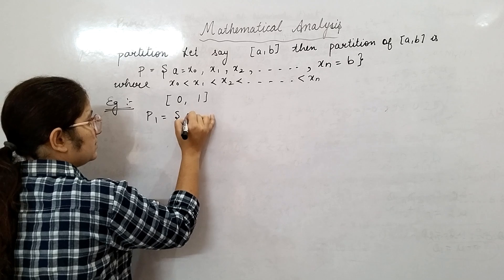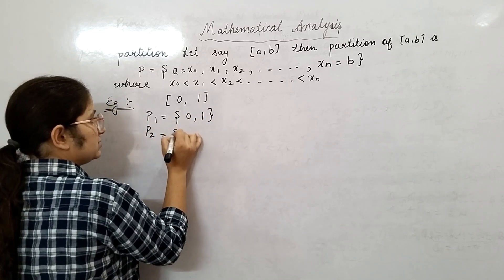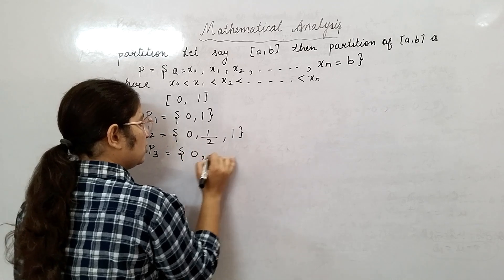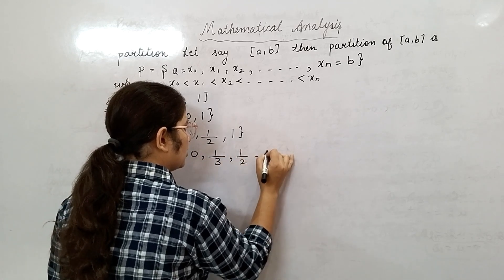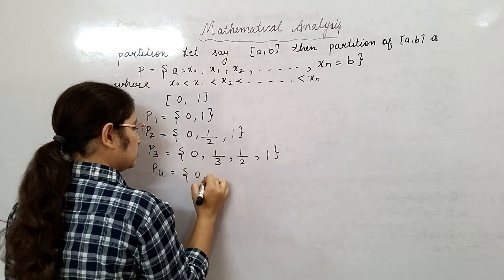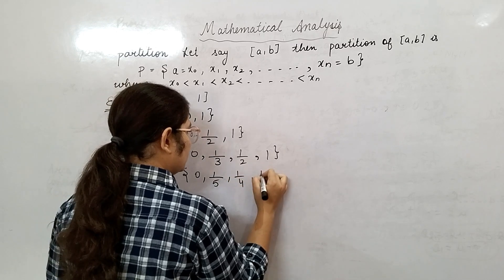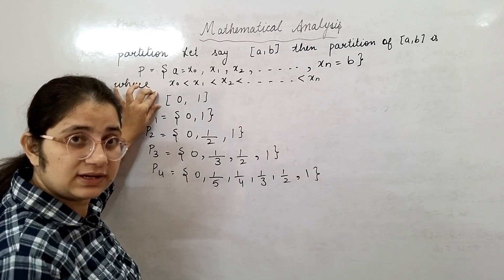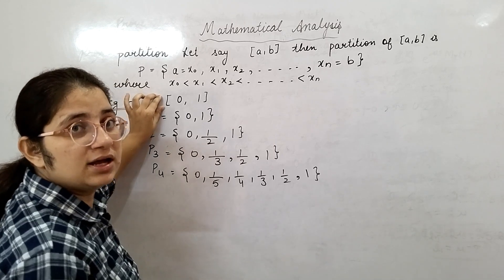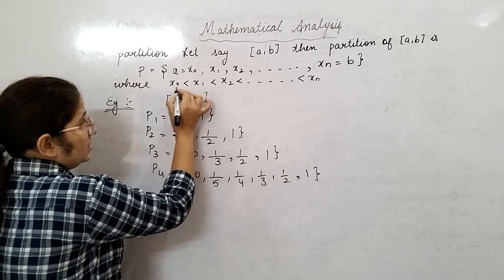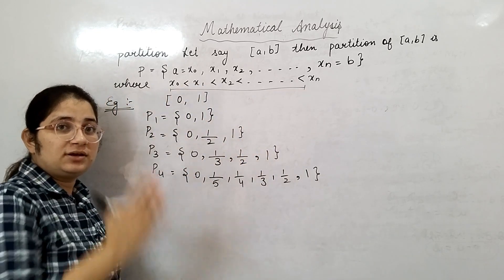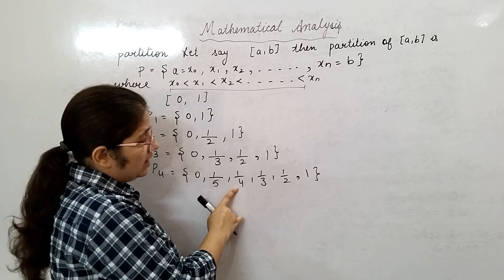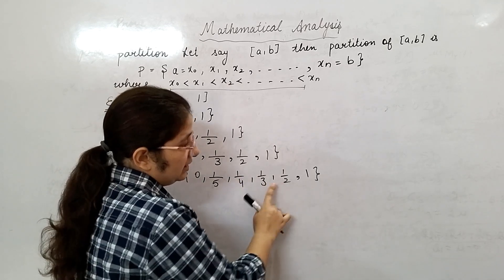P₁ = {0, 1}. P₂ partition: {0, 1/2, 1}. P₃ partition: {0, 1/3, 1/2, 1}. P₄ partition: {0, 1/5, 1/4, 1/3, 1/2, 1}. See, all of these are the partitions of this closed interval [a, b], where a is 0 and b is 1, and it is holding this relationship: 0 < 1/5 < 1/5 < 1/4 < 1/3, like this.